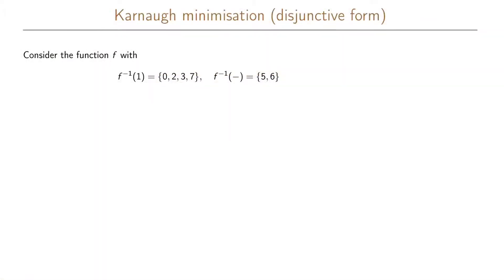Let us do an example of a Karnaugh map minimization. We're going to have a function of three variables and this will be an incompletely specified boolean function because we're going to have a don't-care set. A don't-care set typically means that we don't care if the function gives a 0 or 1 because this input combination cannot happen anyway. Our onset is given by the input combinations represented as 0, 2, 3, and 7, and our don't-care set is given by the input combinations represented as 5 and 6.